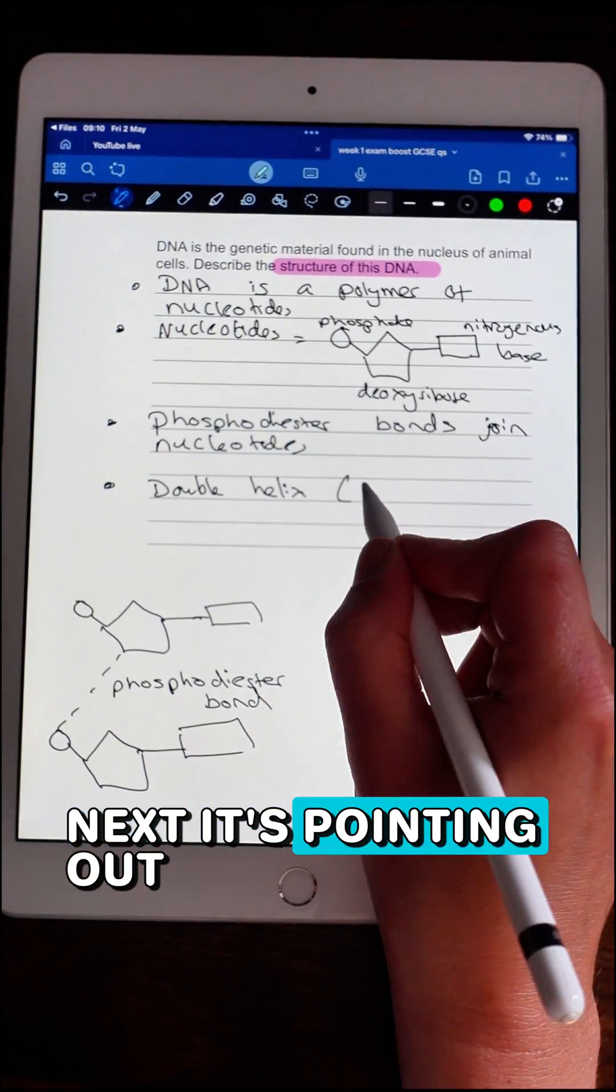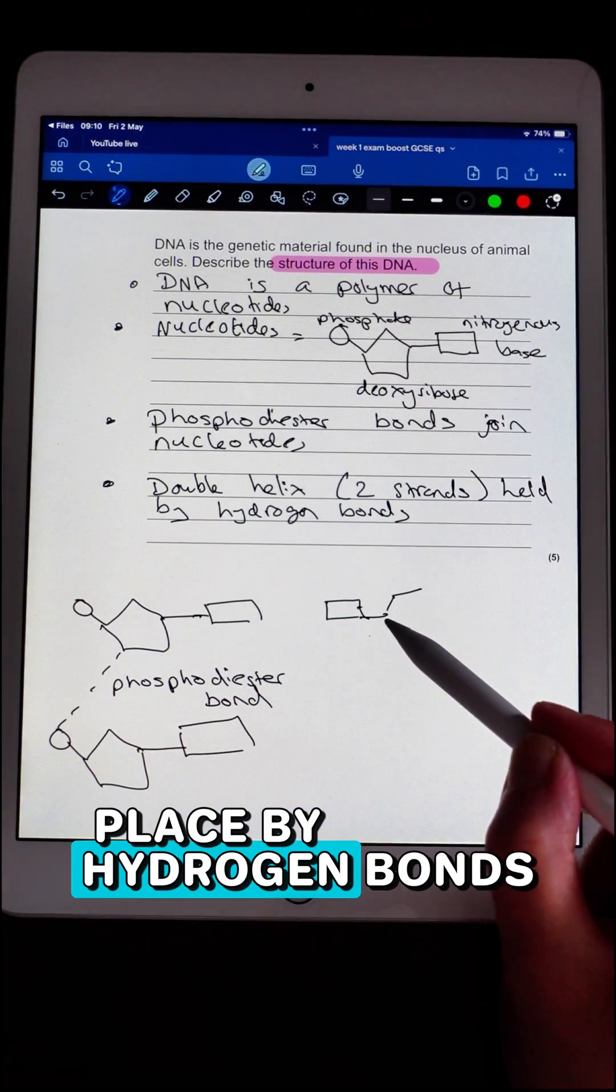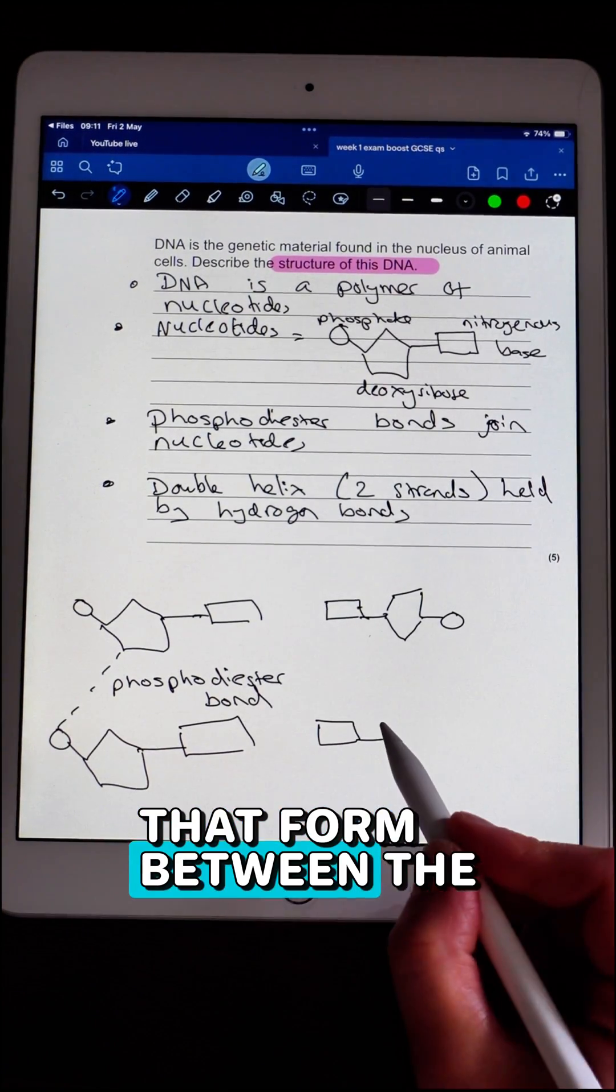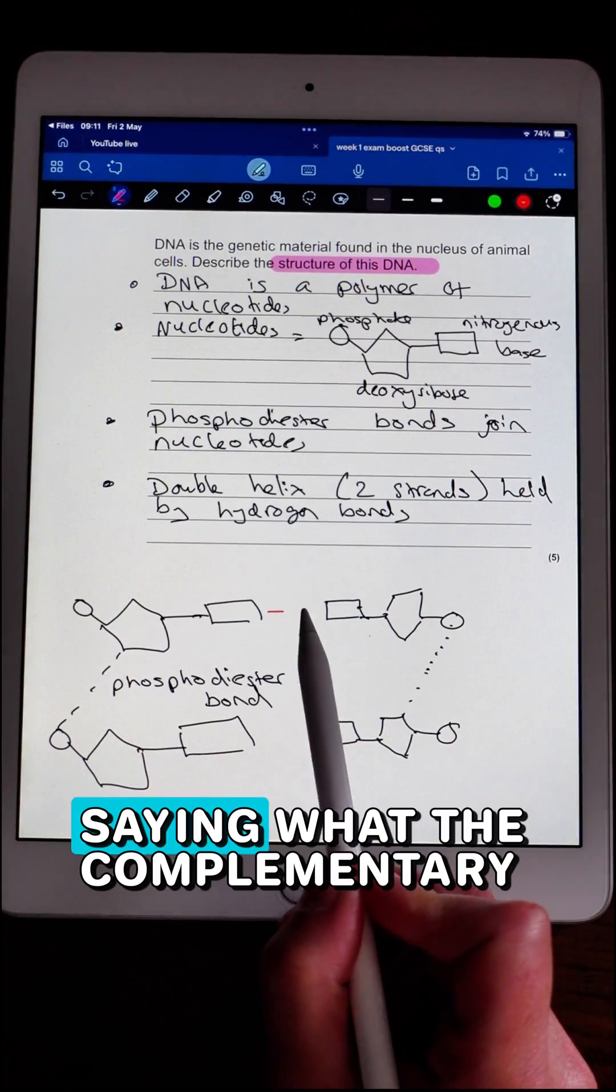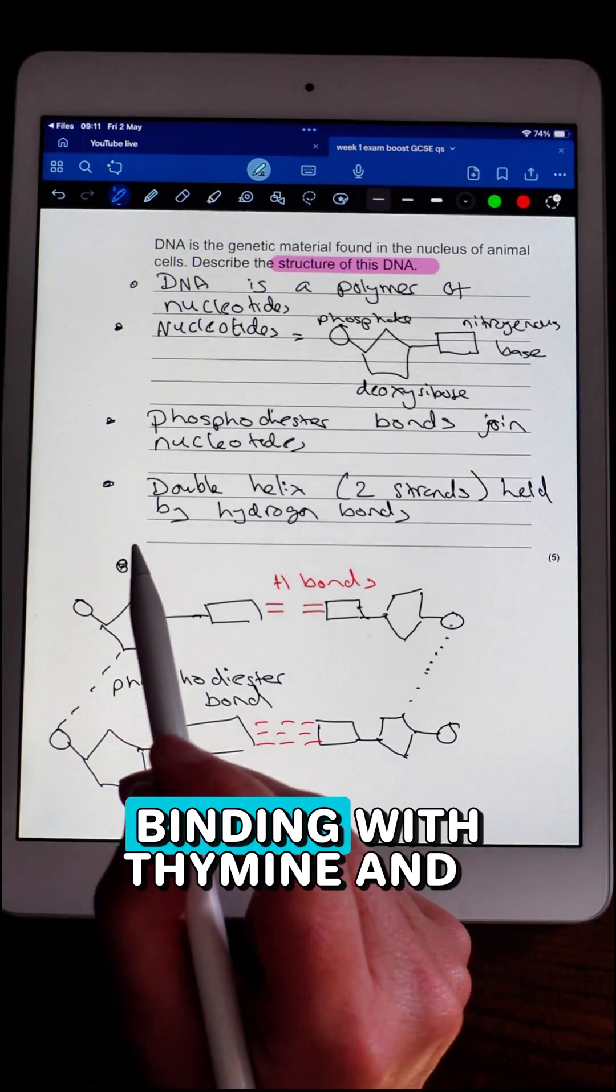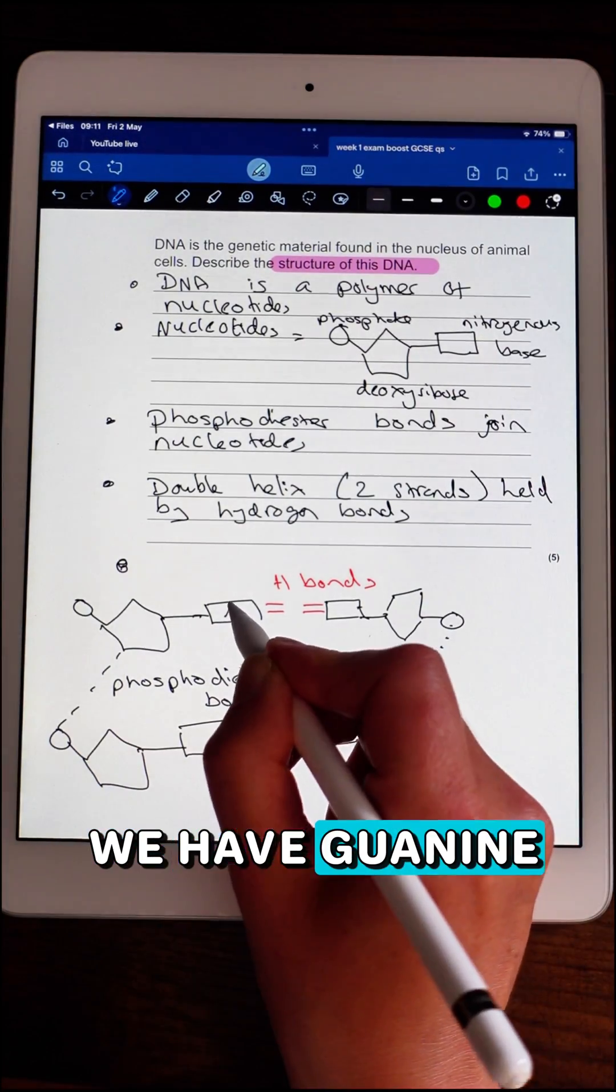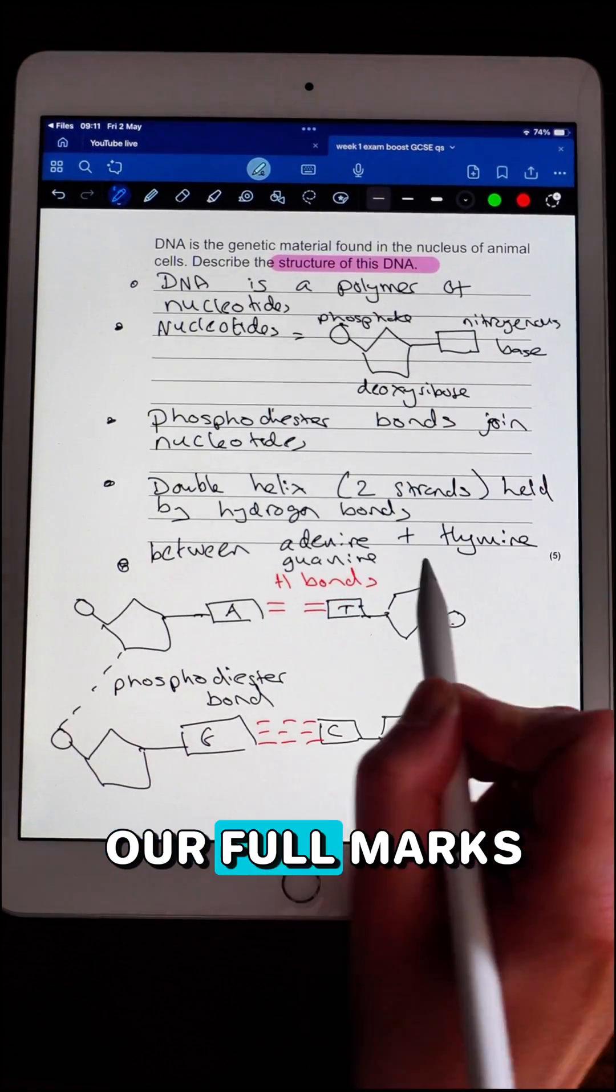Next, it's pointing out that you get this double helix structure which is held in place by hydrogen bonds that form between the complementary base pairs. That is our final mark, saying what the complementary base pairs are. We have adenine binding with thymine and guanine which is complementary to cytosine. So there we have our full marks.